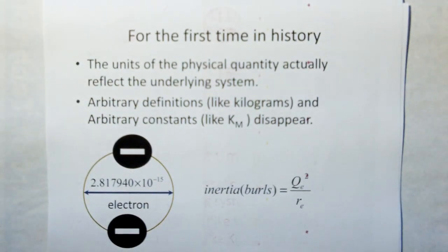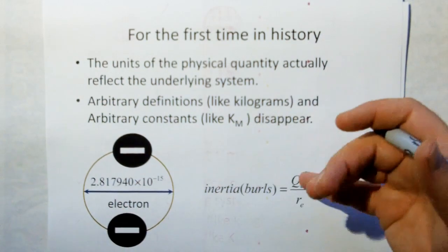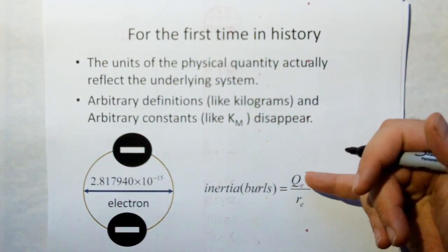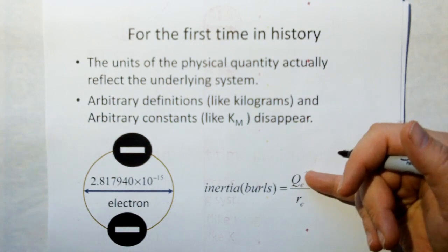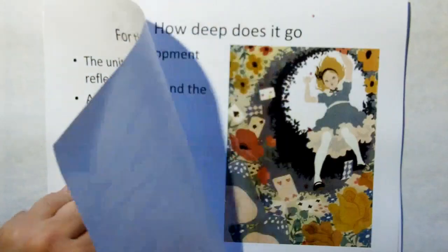So the first time in history, the units of the physical quantities actually reflect the underlying system. Arbitrary definitions like kilogram and arbitrary constants like km disappear. And instead of mass, a system now has inertia in the units of Burrells and the unit of Burrell is square coulomb per meter. Very simple units.